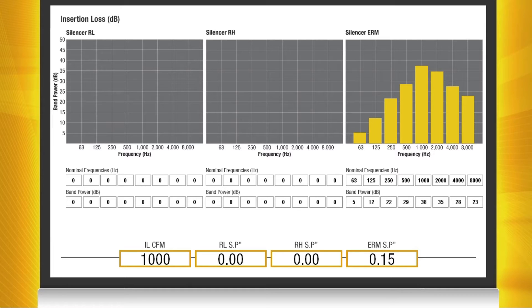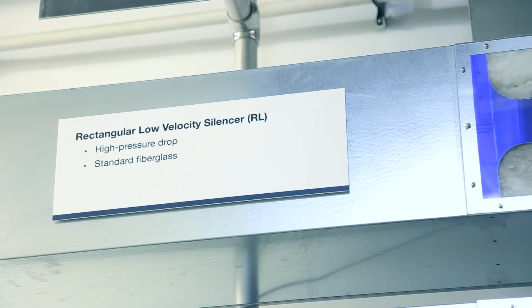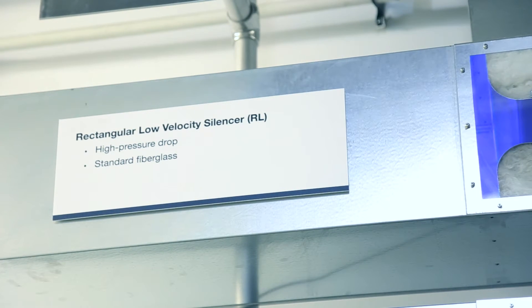Elbow silencers work very well for both turning the air and attenuating the sound in a single duct element. Next we will change from the ERM elbow silencer to the RL rectangular low velocity silencer.